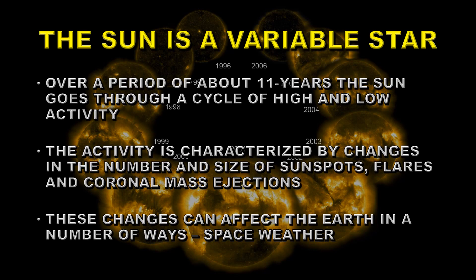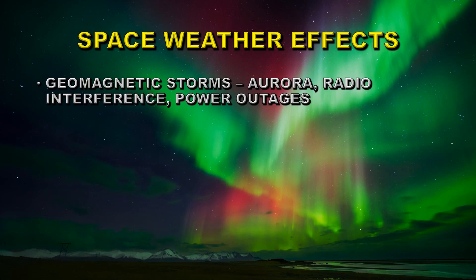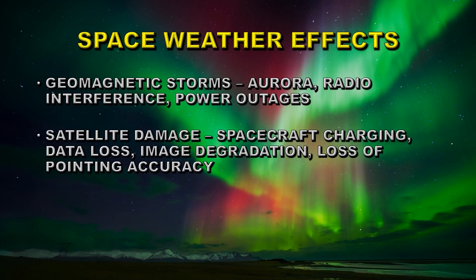These changes can affect the Earth in a number of different ways in a discipline called space weather. A lot of people are unaware of how much variations on the sun can actually affect our daily lives. One of the major effects is a geomagnetic storm. They produce aurora, radio interference, and even power outages, because induced currents can actually affect the grid systems, particularly at high latitudes. They can damage satellites through spacecraft charging, which can destroy electronic parts, and cause data loss because radio signals from the satellite are degraded by space weather effects.